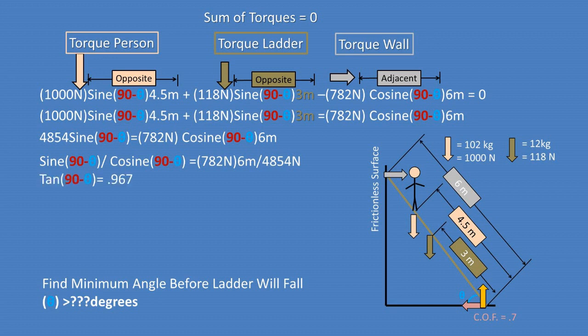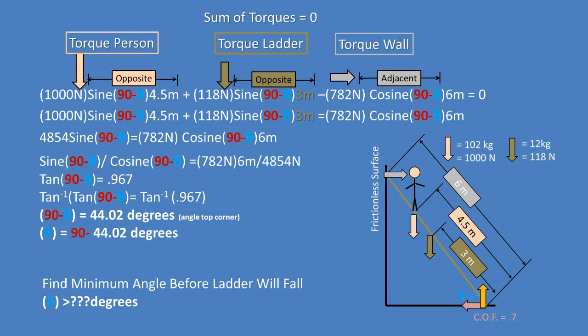Recalling that sine over cosine of an angle equals the tangent, we simplify to get tan(90 − θ) = 0.967. Taking the inverse tangent of both sides gives 44.02 degrees for the top corner angle. Subtracting from 90 degrees gives the angle at the base of the ladder: 45.97 degrees. So the minimum angle at the base before the ladder falls is 45.97 degrees — any angle greater than this will allow the ladder to remain stable.